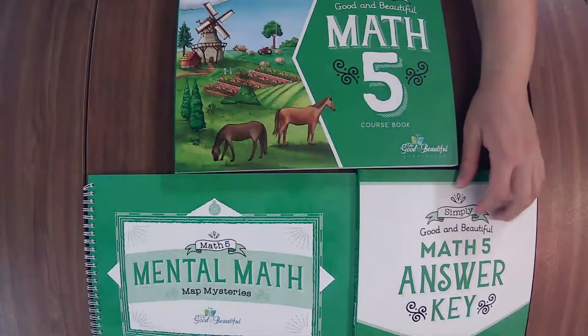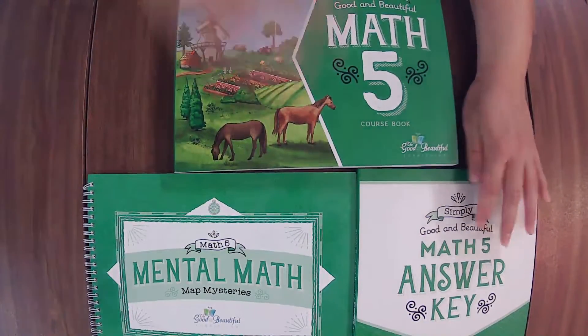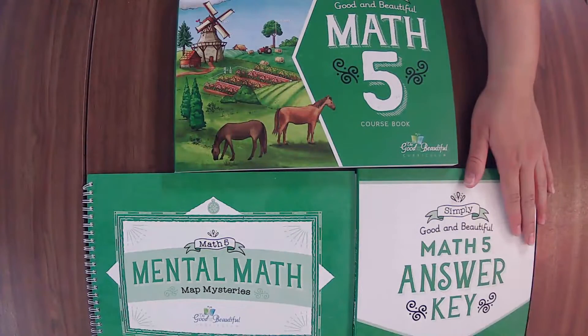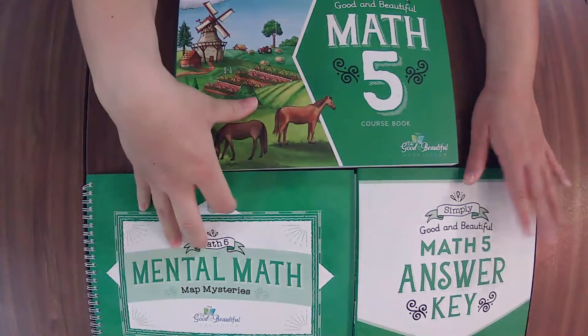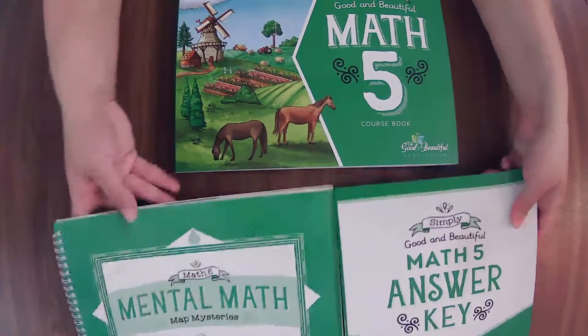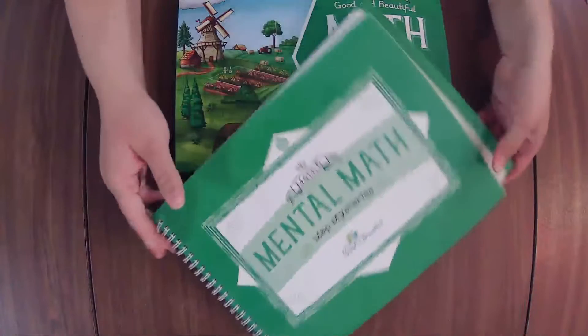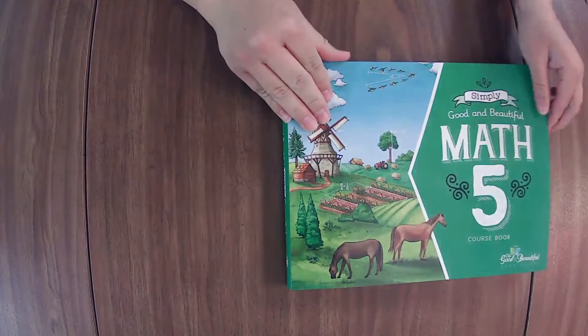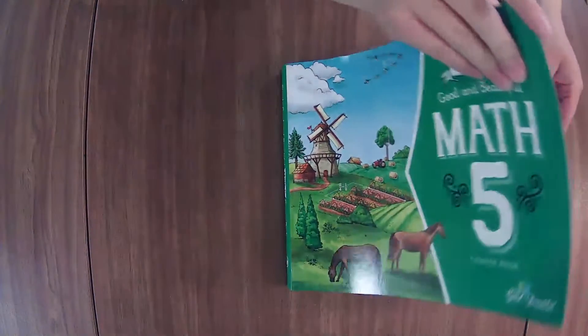We'll go through the course book, we'll go through the mental math map mysteries, and then we'll give you an idea of what you get in the answer key. This is what comes in the course set. I don't think you want to see every page of that one though. If we haven't met yet, hi there, I'm Elaine from On the Same Page Together. We are a Christ-centered home of learning and on this channel we talk about all things family.